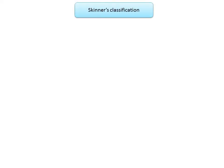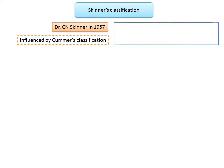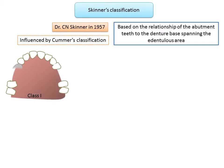Moving on to Skinner's classification, introduced by Dr. C.N. Skinner in 1957. His classification had five classes, of which a few were similar to Commer's classification. This classification is based on the relationship of the abutment teeth to the denture base spanning the edentulous area.